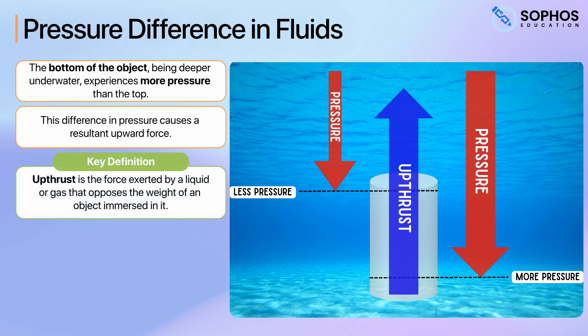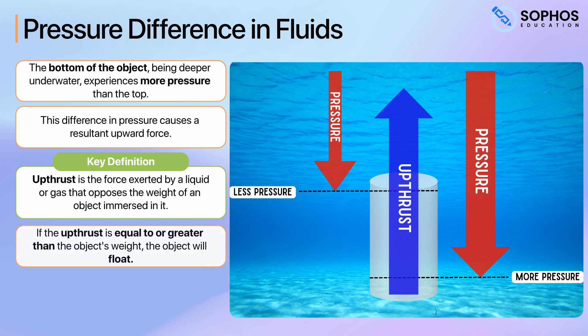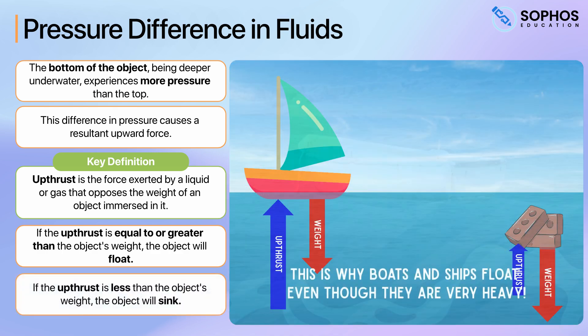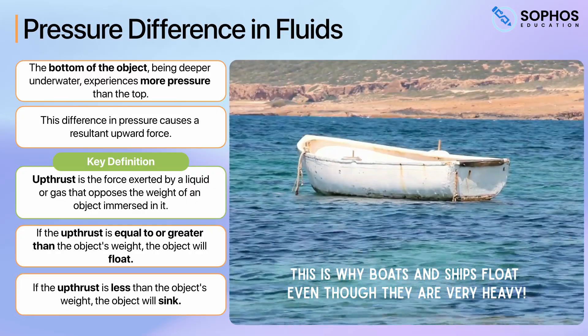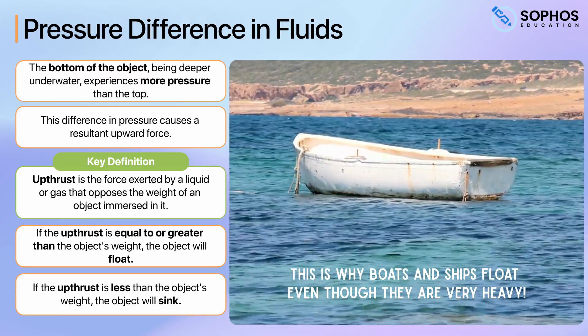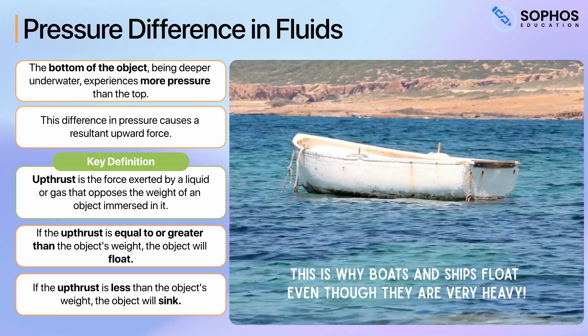This upward force is what we call upthrust or buoyant force. Upthrust is the force exerted by a liquid or gas that opposes the weight of an object immersed in it. If the upthrust is equal to or greater than the object's weight, the object will float. If the upthrust is less than the object's weight, the object will sink. This is why boats and ships can float even though they are very heavy — the water provides an upthrust that balances their weight.